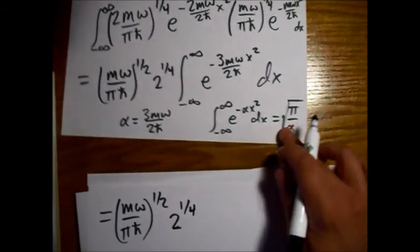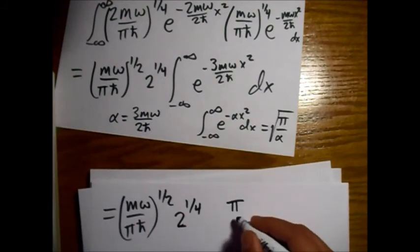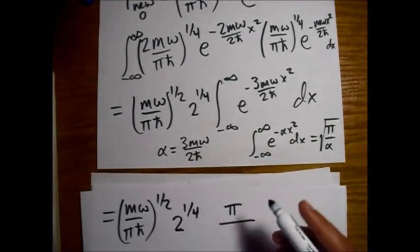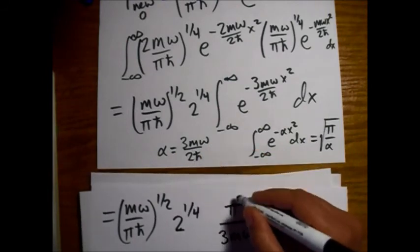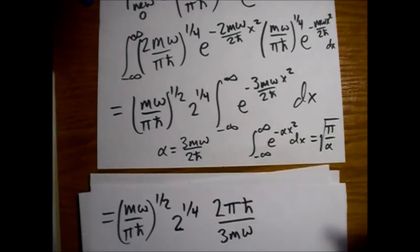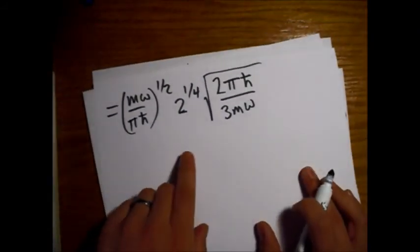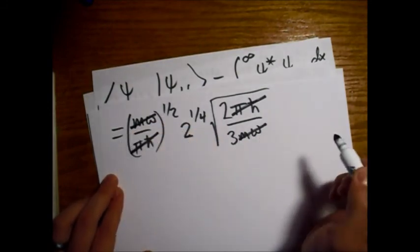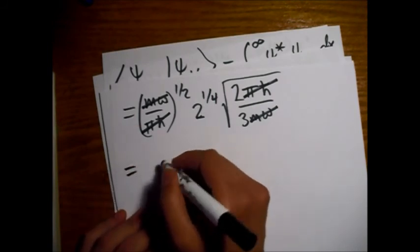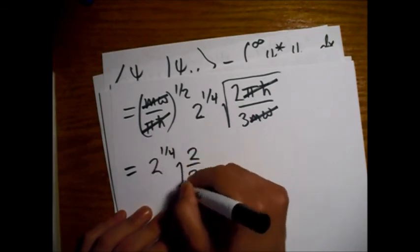So now here we go. We're just going to plug in this pi over alpha under a square root. So we have a pi on top, and on the bottom, we're dividing by alpha, so on the bottom we'll have the 3m omega, and then we'll have the 2 h bar on the top. And this is all under the square root. So this is under a square root, and this is under a square root. We can cancel pi h bar. We can cancel m omega. And yeah, it did all work out. So we have a 2 to the 1/4 times the square root of 2/3.